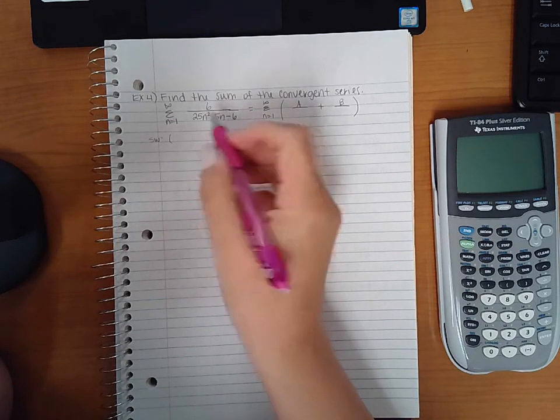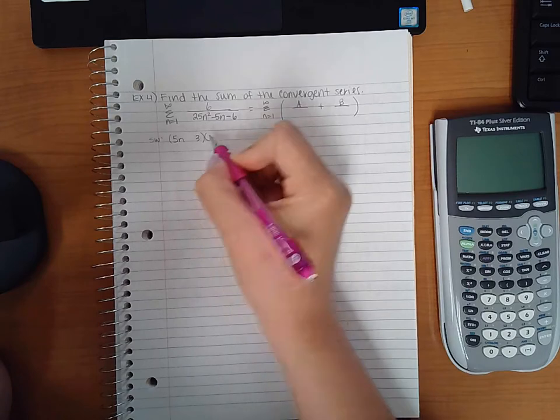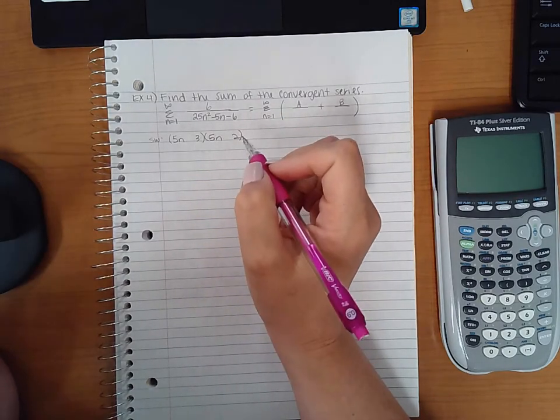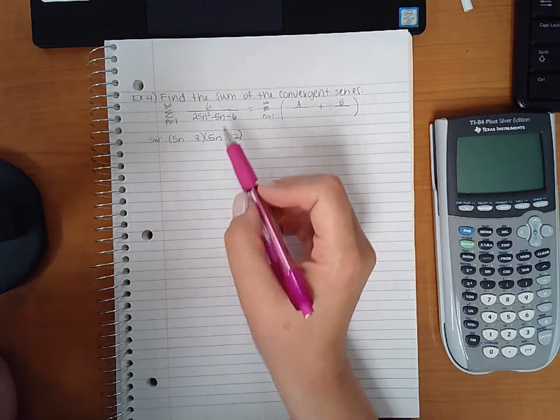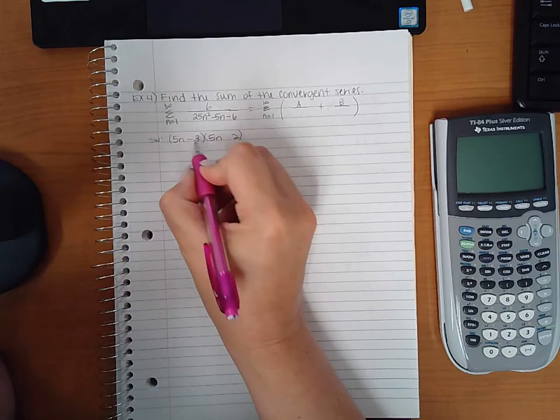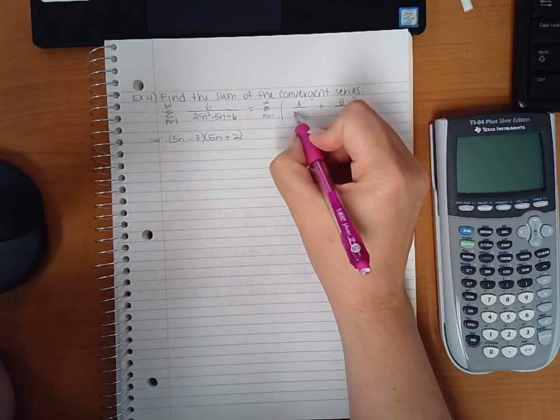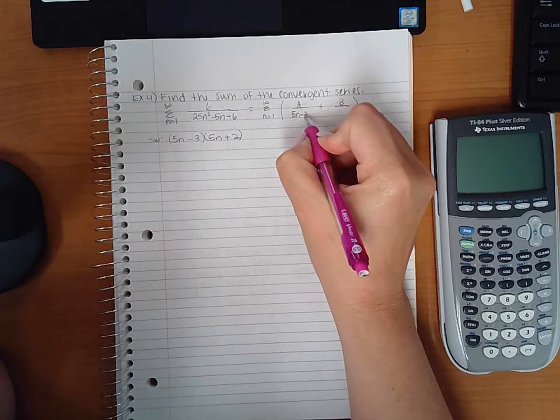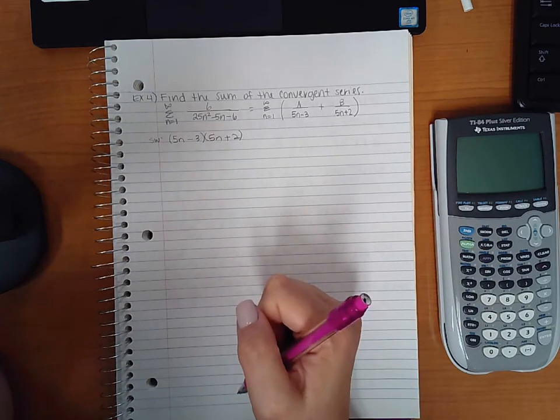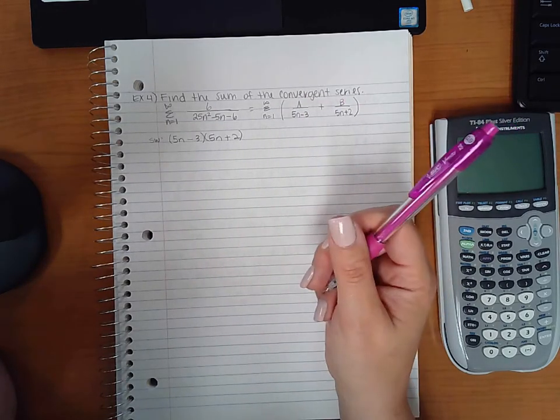The first thing we want to do is factor this here. So I'm going to try 5n and 3 and 5n and 2. I'm going to try it and see if I get an answer. So this would make 10, this would make 15. In order for me to get negative 5, the 15 would have to be negative and the 10 would have to be positive. So then this would be 5n minus 3 and 5n plus 2.